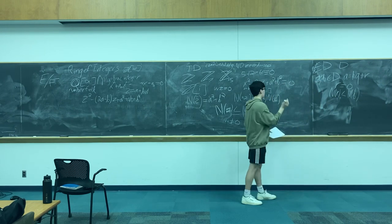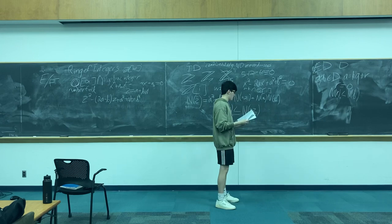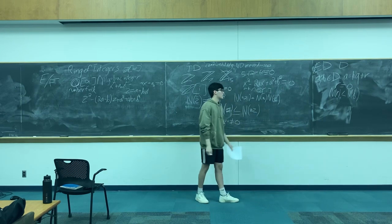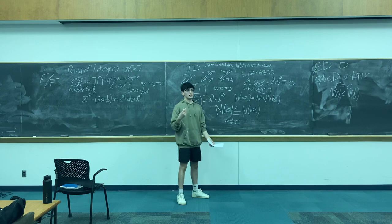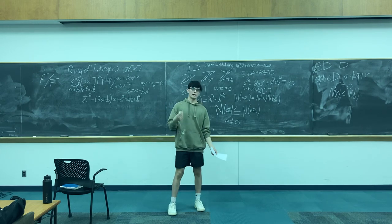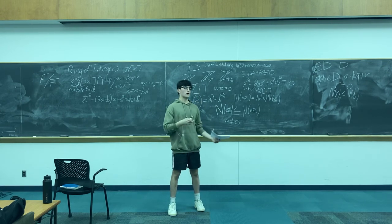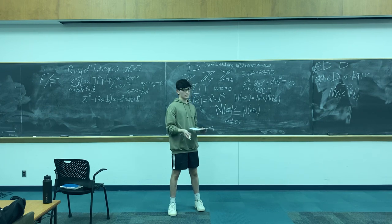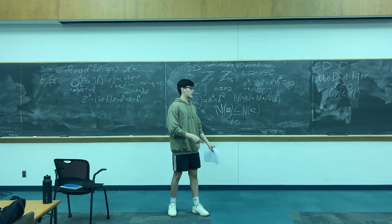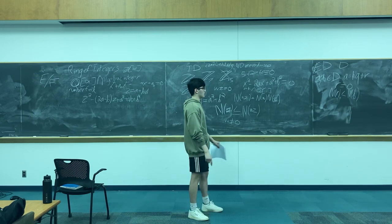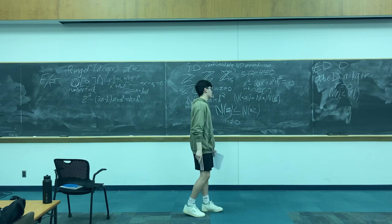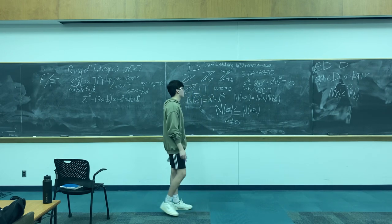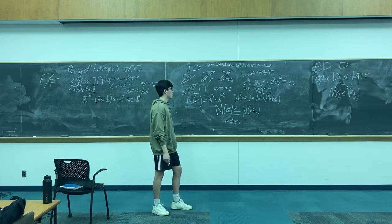This is essentially the same as the division algorithm for the integers, except for our domain. The key difference is that we have this norm function telling us that the size of the remainder is decreasing. In the integers we can clearly see one number is less than another, but the notion of size isn't exactly clear when working in other spaces. So for a Euclidean domain, we need a Euclidean function to guarantee we can do the division algorithm and that the remainder is decreasing.